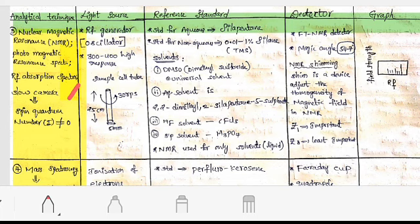The light source is RF generator, that is oscillator, 300 to 400 is the high response. The sample cell tube rotates 30 rpm per second, and the length is 25 centimeters and width is 5 mm.